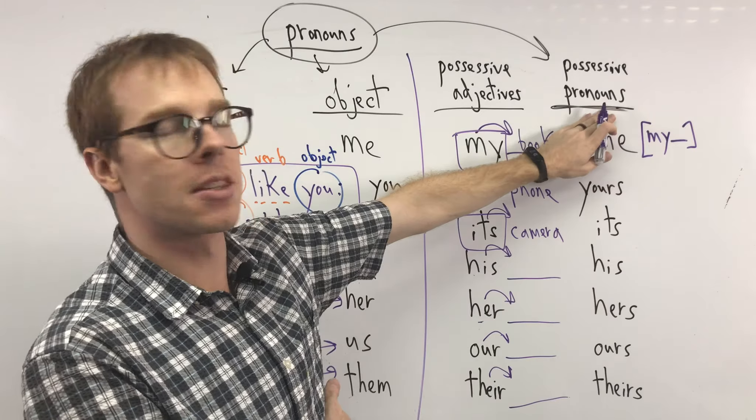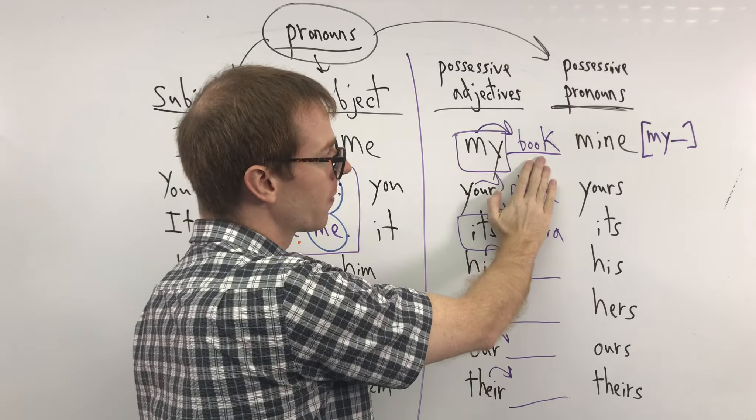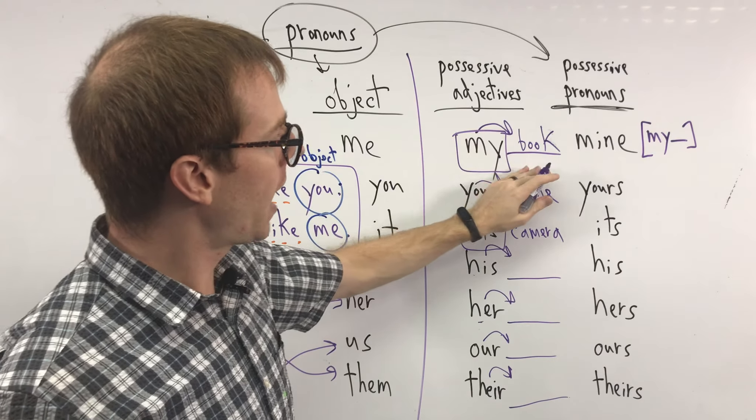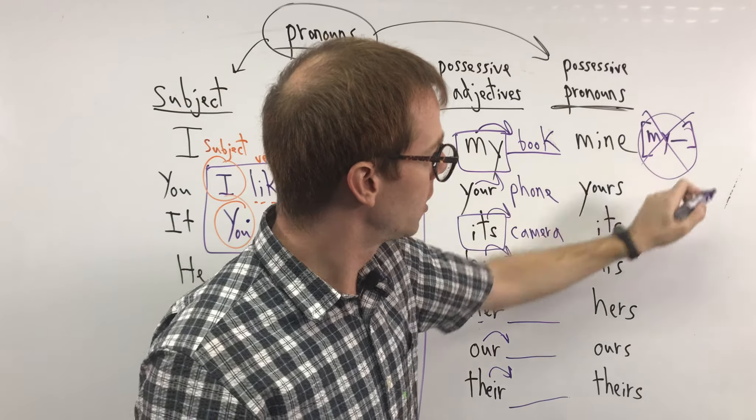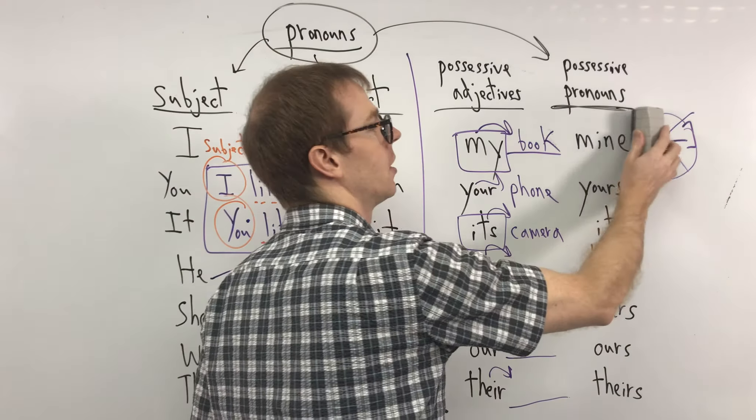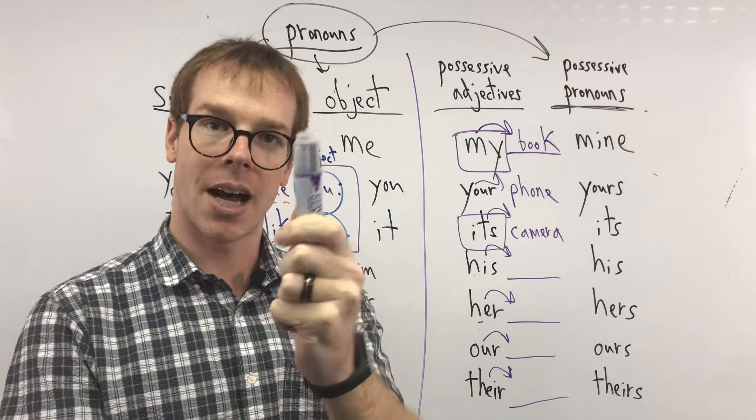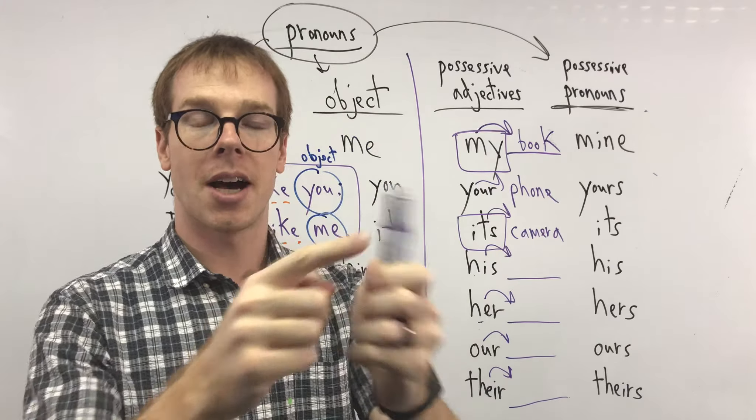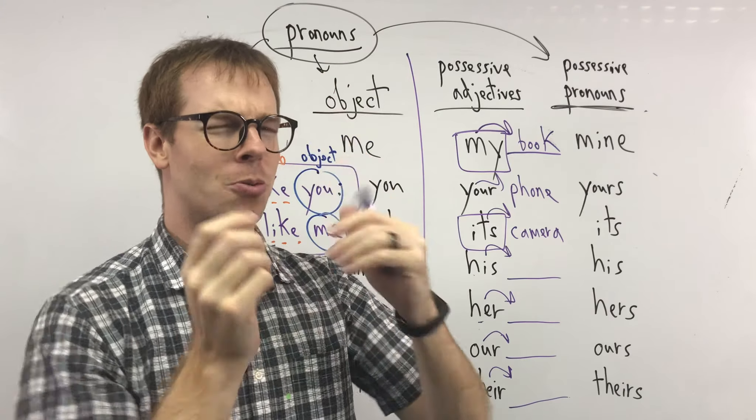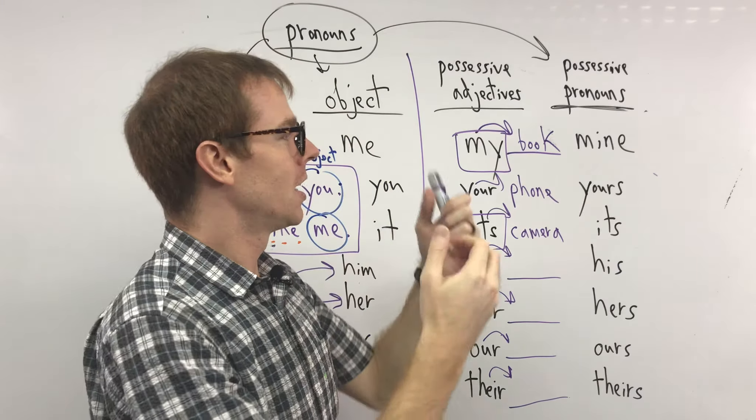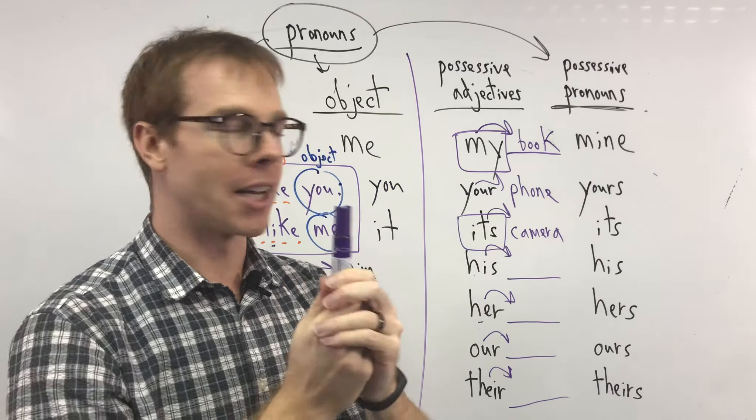But we also have this, the possessive pronoun, where instead of saying my book, I don't have to say book. My, I change, get rid of my, change to mine. This is my marker, it's mine, mine, it's mine. These are mine, this is mine. Children love to say mine because it means they own that thing. My marker, mine.